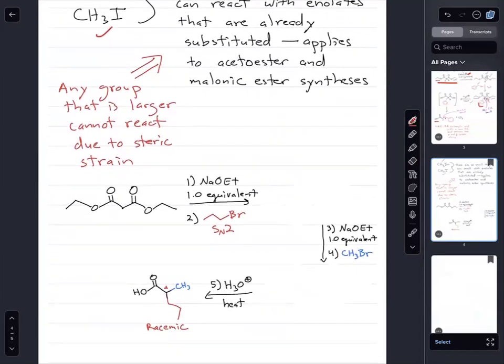Let's see an example. Once again, we're going to start with malonic ester, diethyl malinate. We're going to add one equivalent of sodium ethoxide to make the enolate. We're then going to add propyl bromide, a primary haloalkane, to carry out an SN2. That gives us this alkylated product.